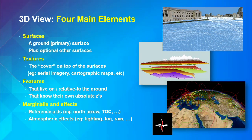Once you've got that surface, you can put textures on it. The most common texture is aerial imagery. So the most common surface is the ground, and the most common texture is aerial imagery — they're two different data sources. You put them together and you start to get some 3D in your view. Then we have features: things that live on or relative to the ground, like trees, buildings, or planes going up in the air. They're rendered and authored differently.